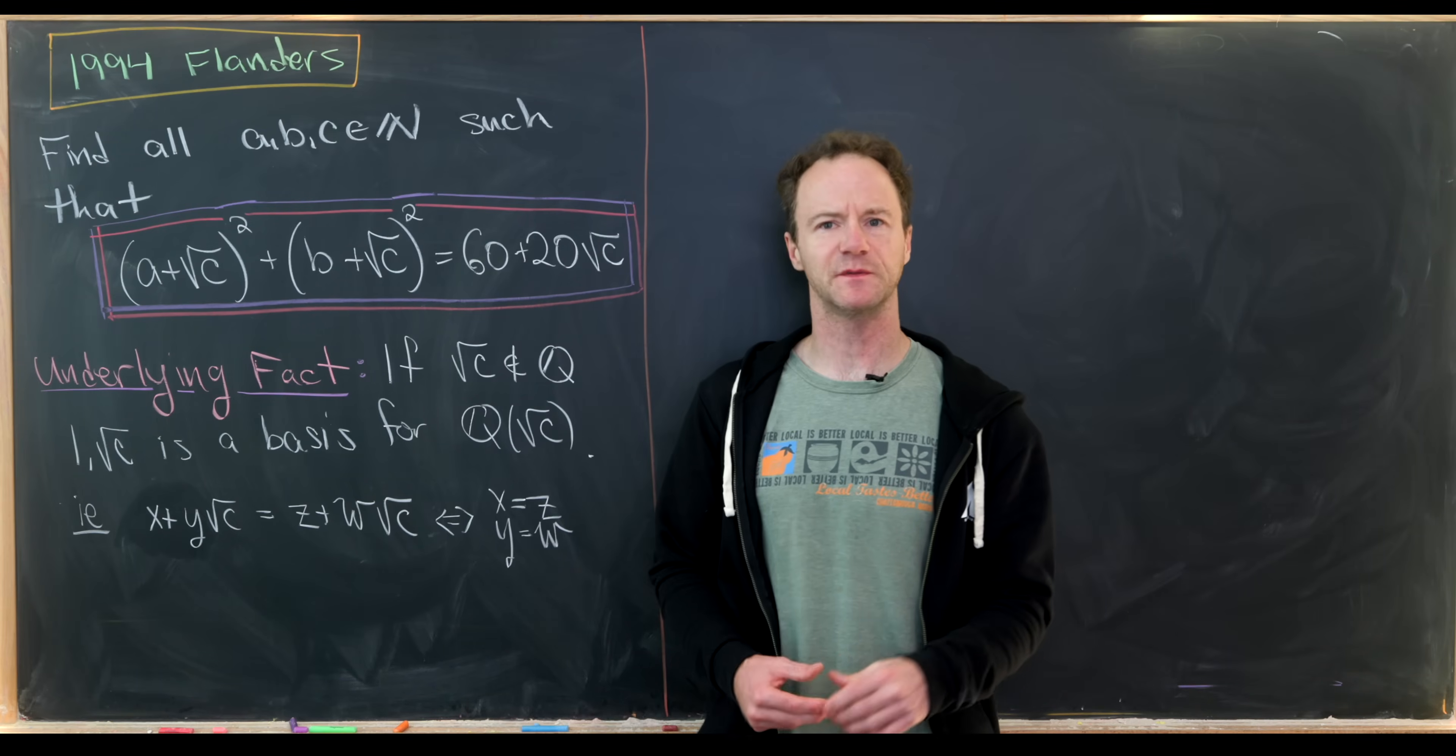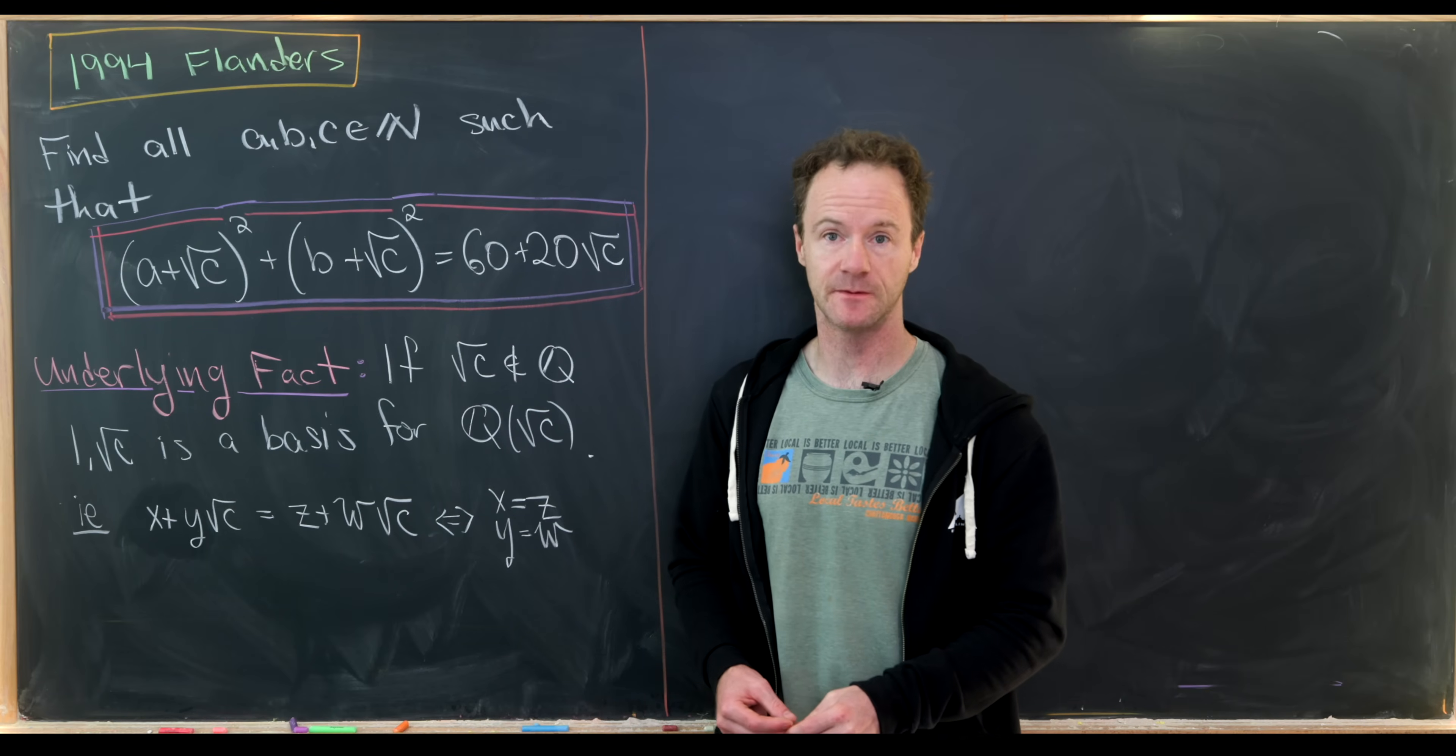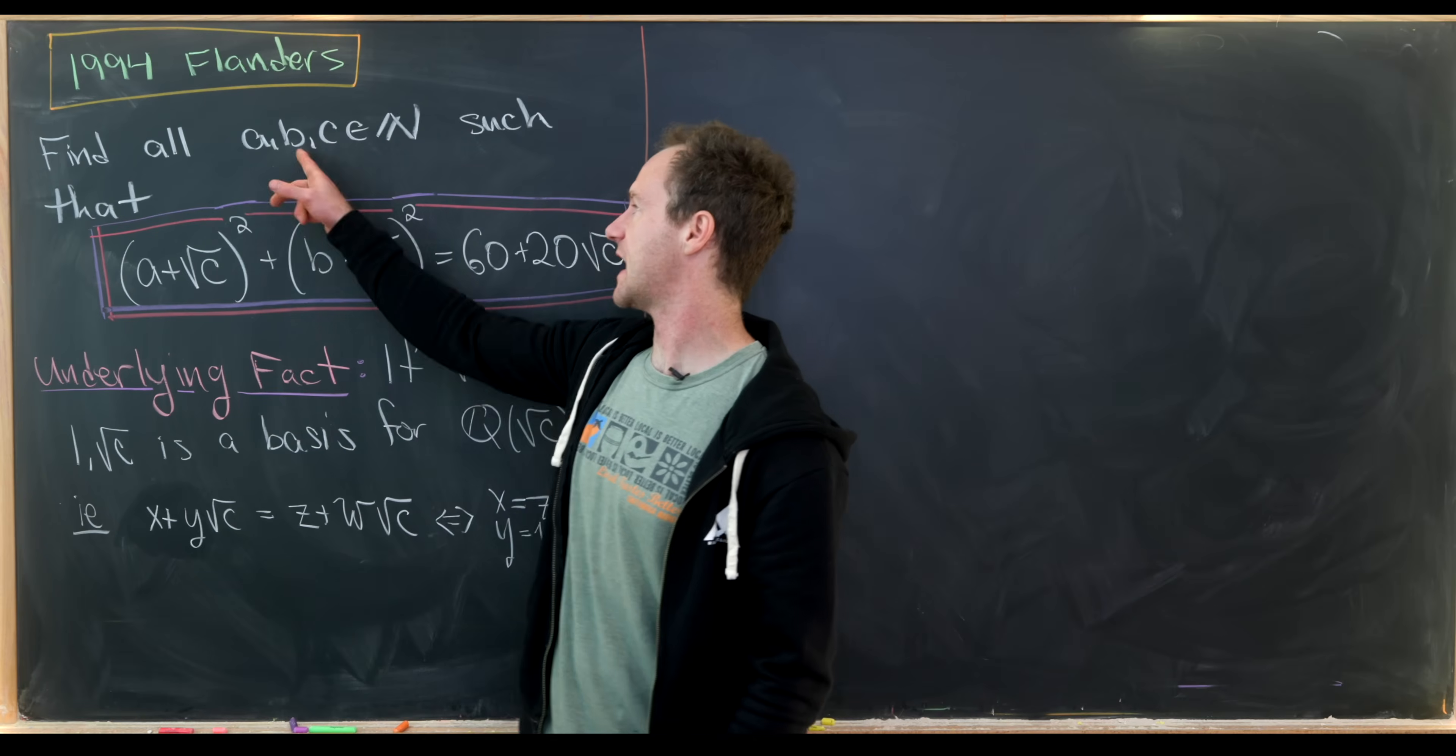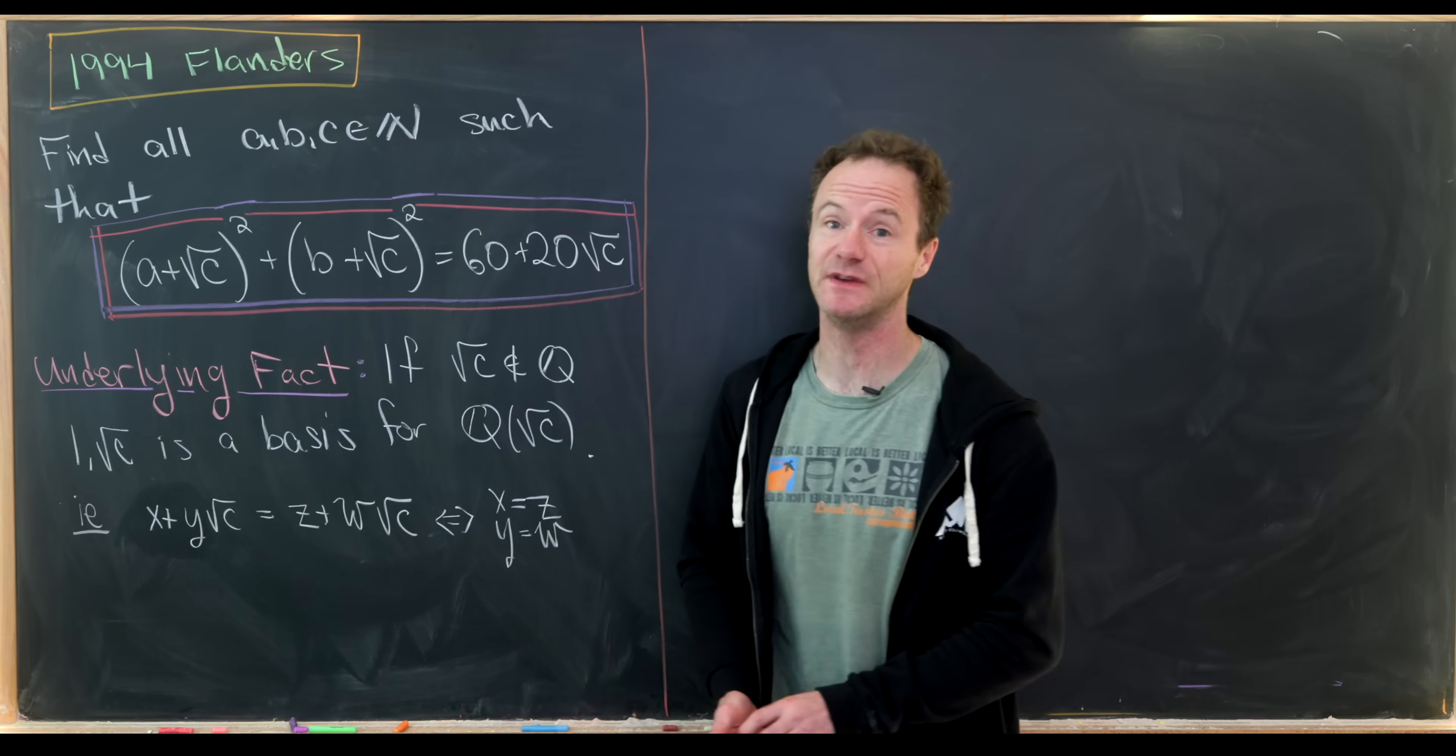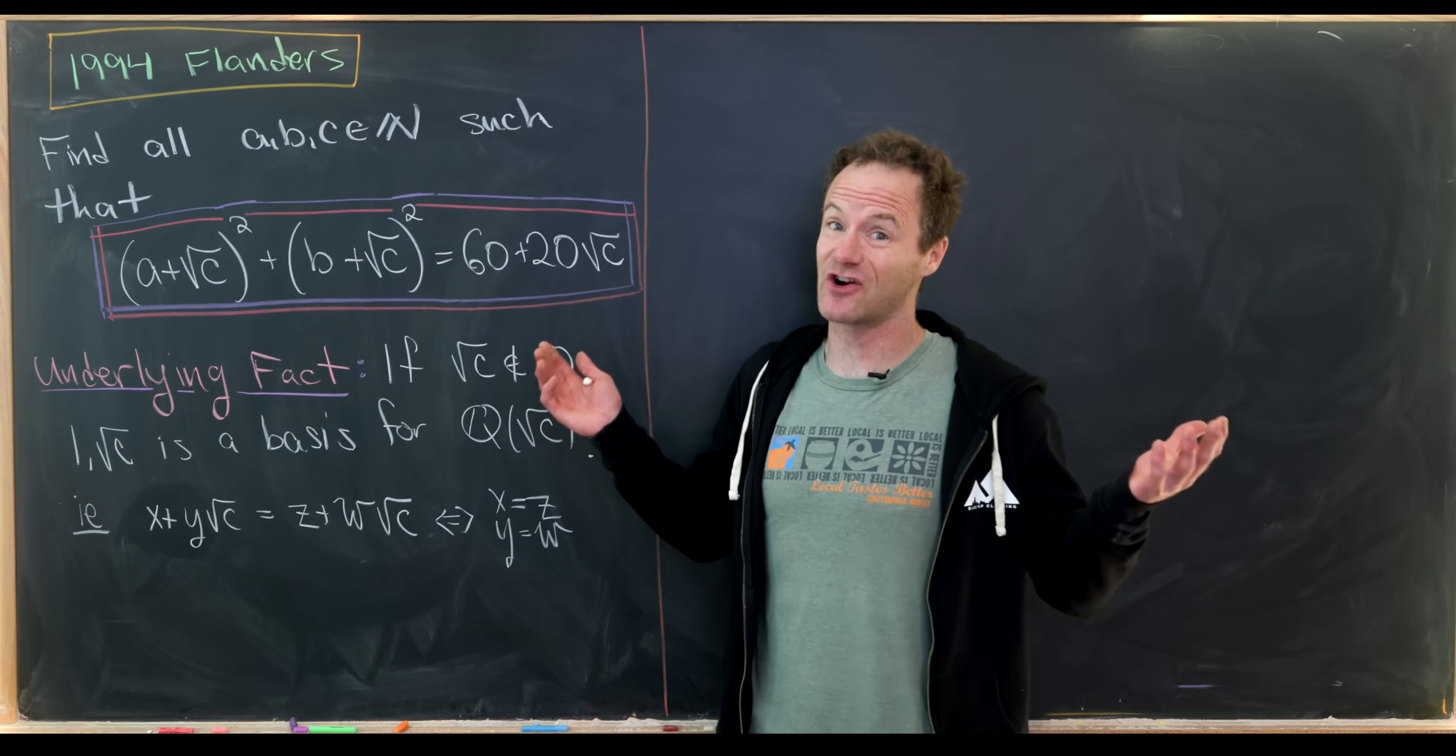Today I've got a nice number theory problem that comes from the 1994 Flanders Mathematical Olympiad. So let's see what we have. Our goal is to find all natural numbers a, b, and c. And somewhat controversially, I'll take the natural numbers to be the positive integers so that they don't include zero. Sorry!